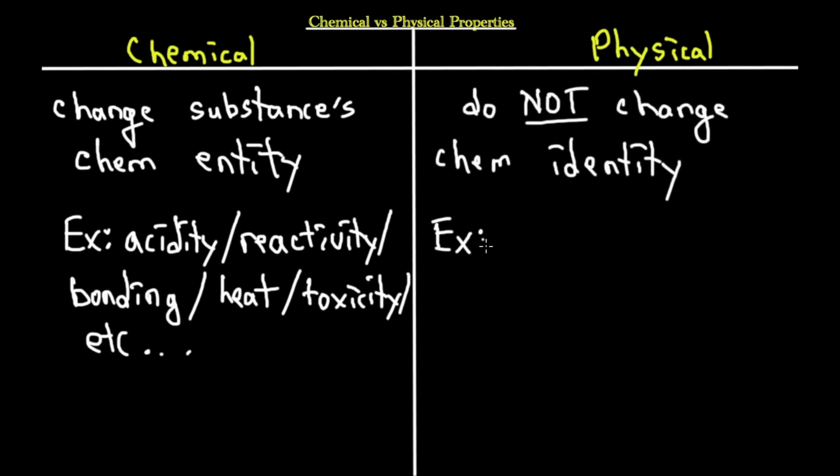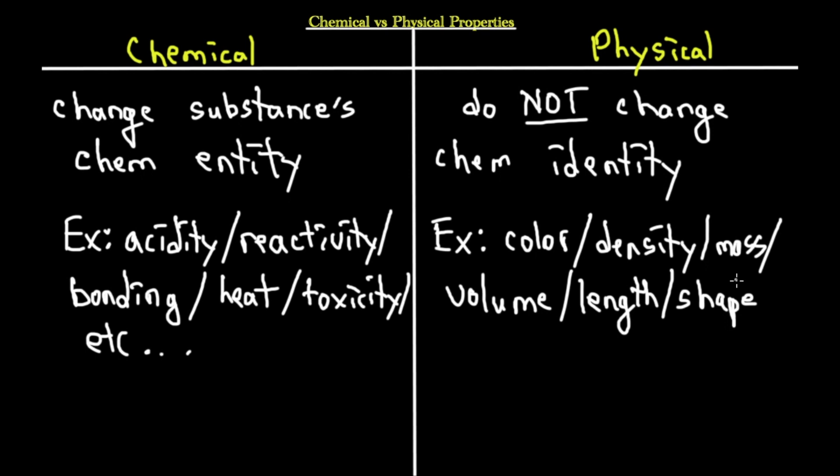Examples of physical properties include color, density, mass, volume, length, and shape. The easiest way to think about this: physical properties describe what something looks like, whereas chemical properties describe how a substance will change in a different environment — when something is applied to it, when it reacts with something, or when it produces a gas. When something chemically changes, that is a chemical property.